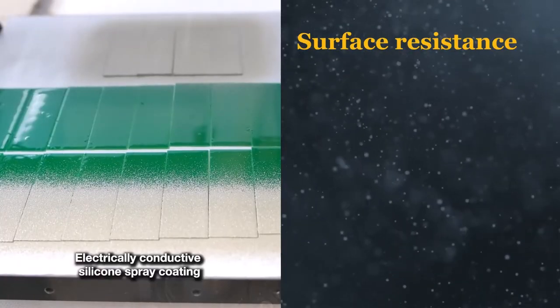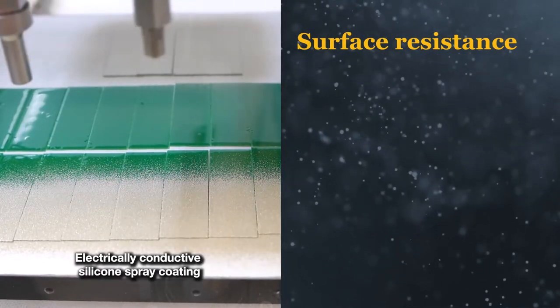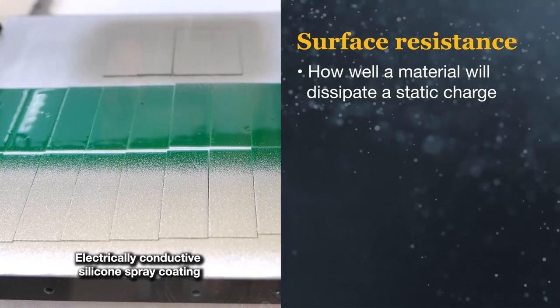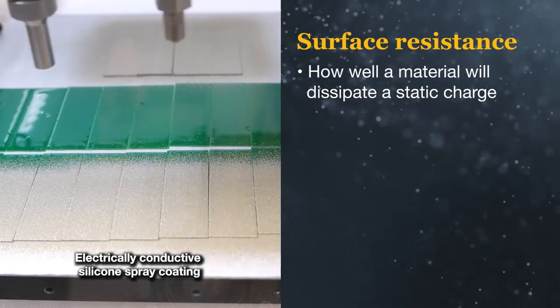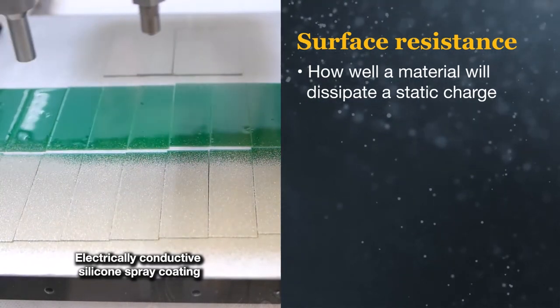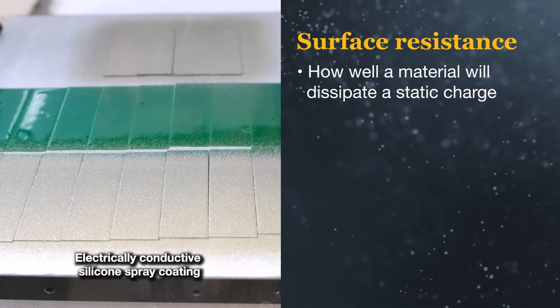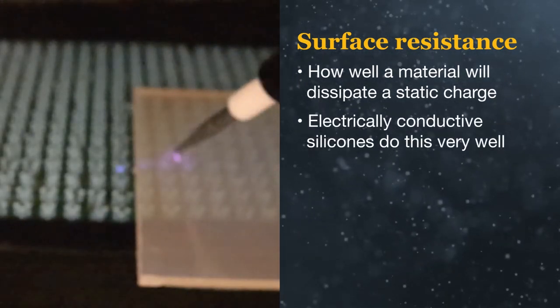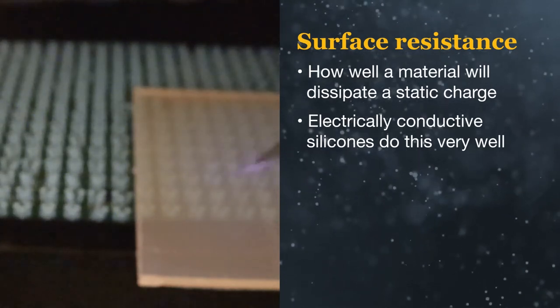The final property we will mention is surface resistance which is similar to surface resistivity. Surface resistance is a measure of how well a material will dissipate a static charge on its surface. Efficient dissipation requires a high level of conductivity and silicones are electrically insulative.